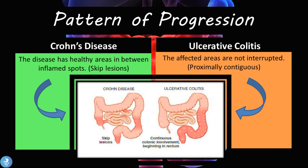Now let's talk about pattern and progression. In Crohn's disease, there are healthy areas in between inflamed spots, and this is called skip lesions — affected area, then normal, then another affected area, and so on. For ulcerative colitis, the affected areas are usually not interrupted; it is approximately contiguous, meaning it continuously affects a whole segment without skipping regions.